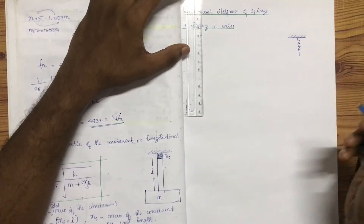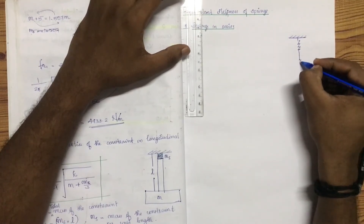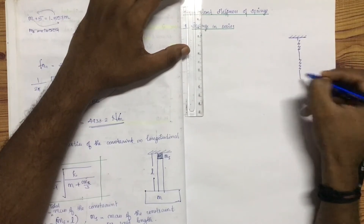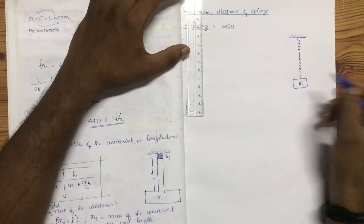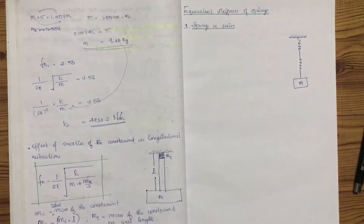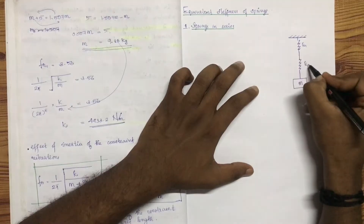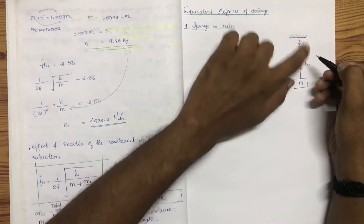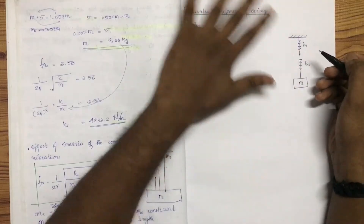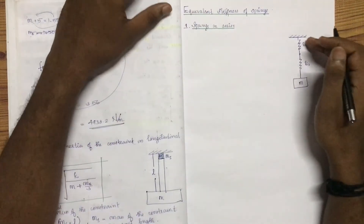I'm going to get a spring with a stiffness. Now I'm going to get another spring, and here I'm going to get a mass. There are two springs, and the springs are arranged like this. Here is the first spring and the next spring. K1 and K2 are the stiffness values.